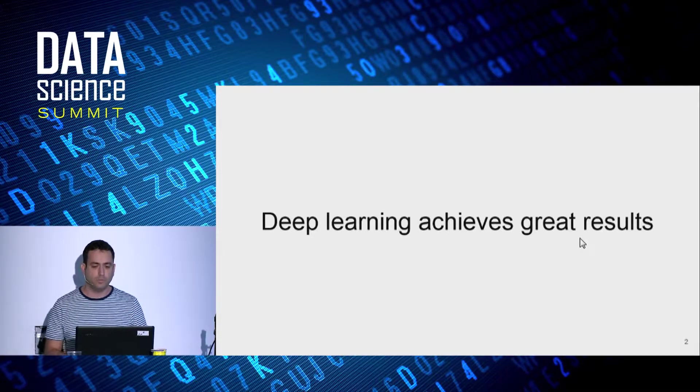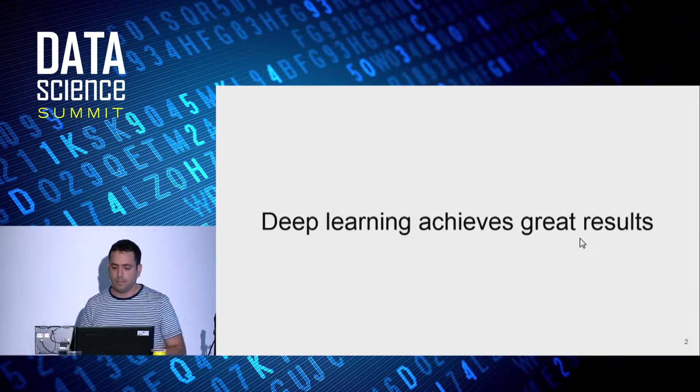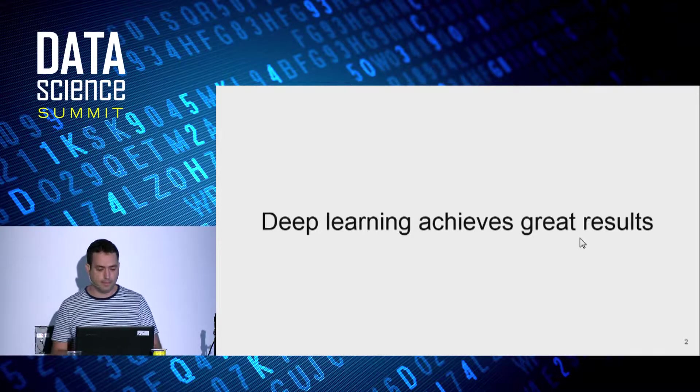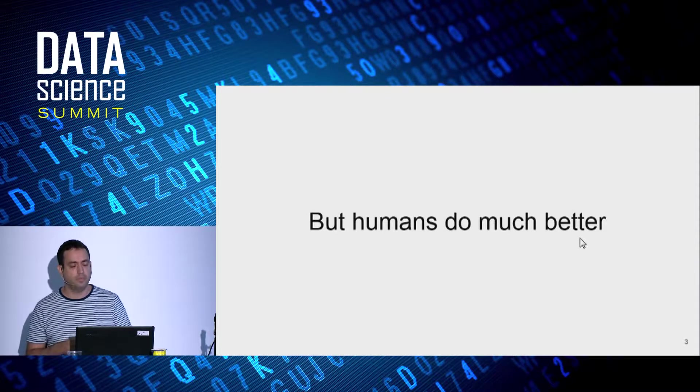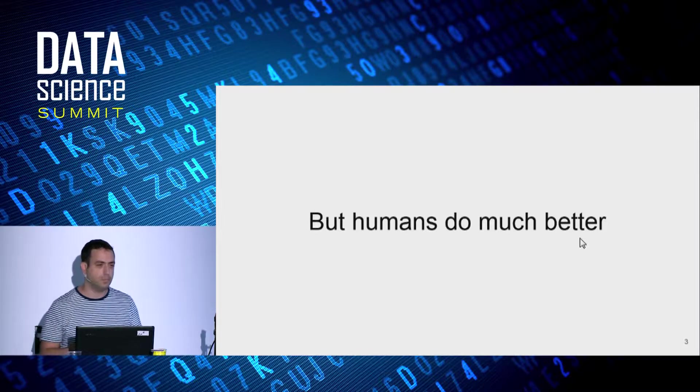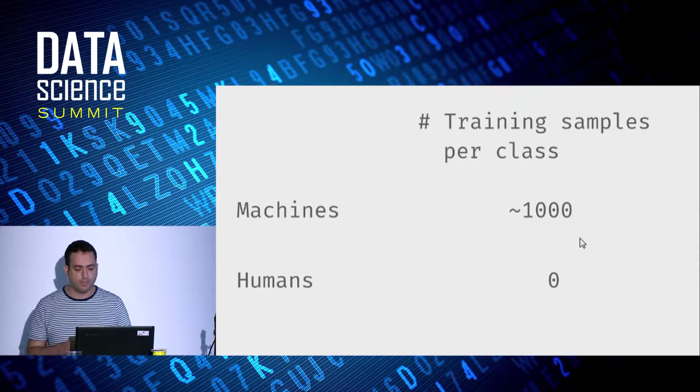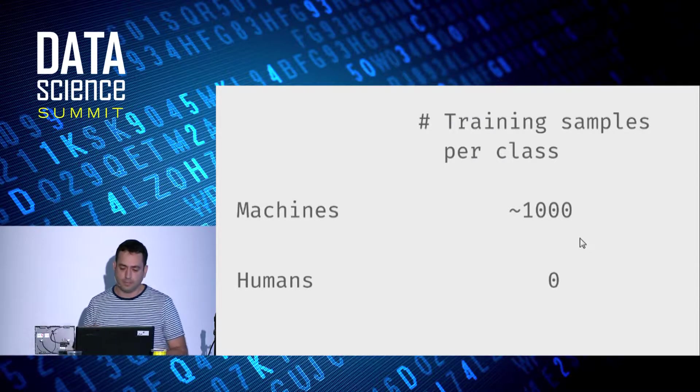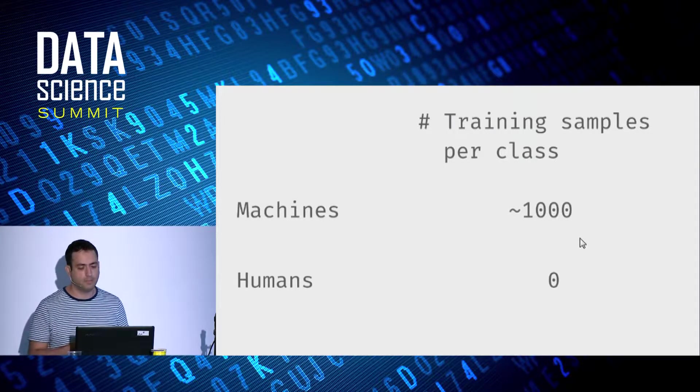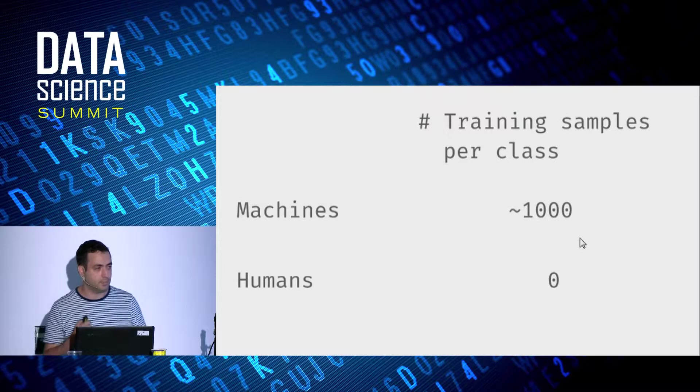During the last years, deep learning achieved great results in image-related tasks. However, humans are still doing much better. Traditional machine learning models required many training examples, while humans can recognize objects without seeing any training examples.